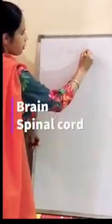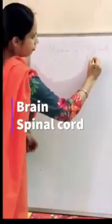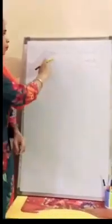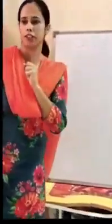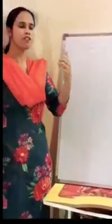The nervous system is made up of two things basically — one is the brain, and the other is the spinal cord. The nervous system is comprised of these two things: brain and spinal cord. First we talk about the brain.